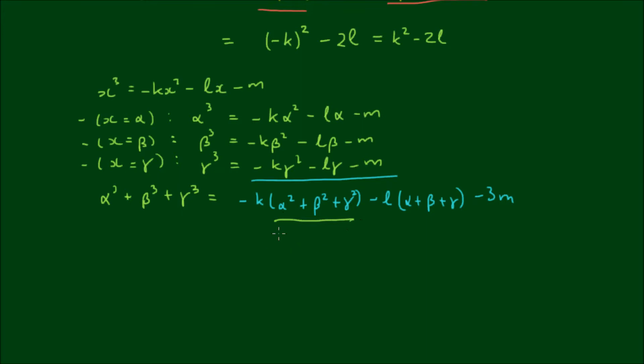And of course this term is equal to k² minus 2L as we found before. The addition of the roots is equal to the x² coefficient, or negative of the x² coefficient, which is minus k. So we have minus L times minus k.